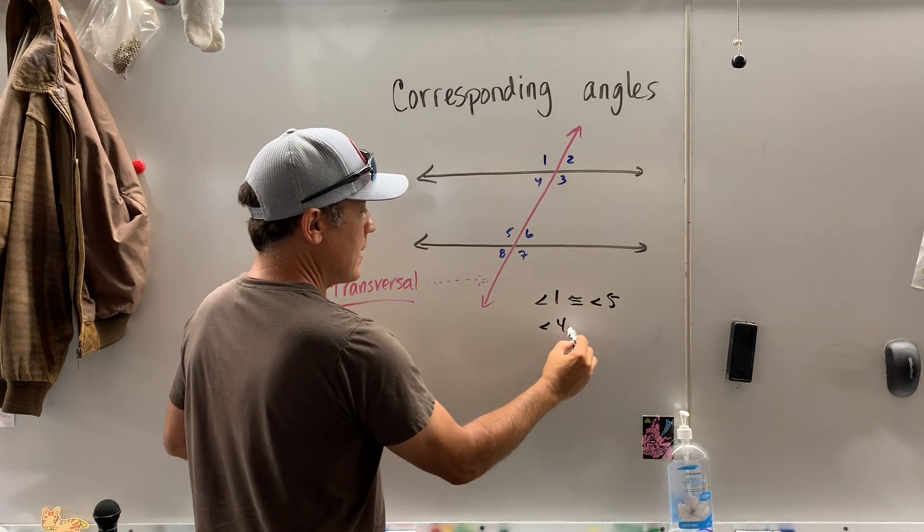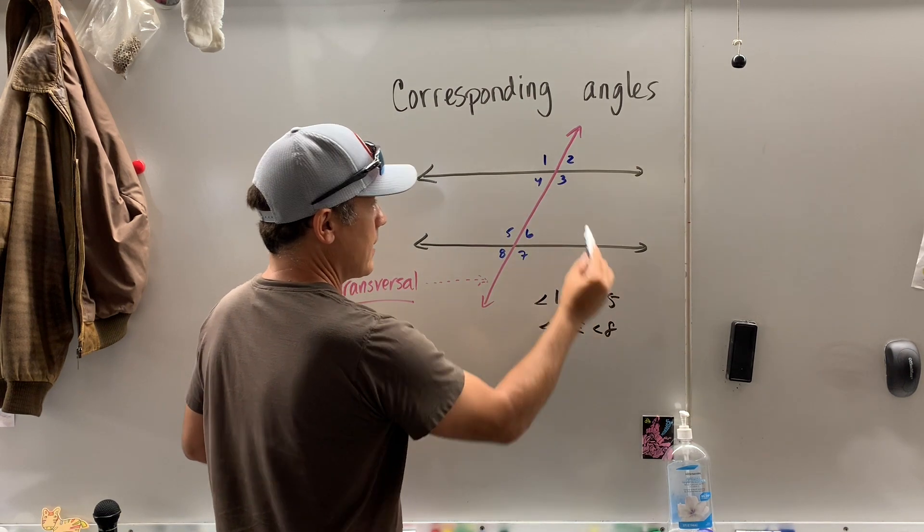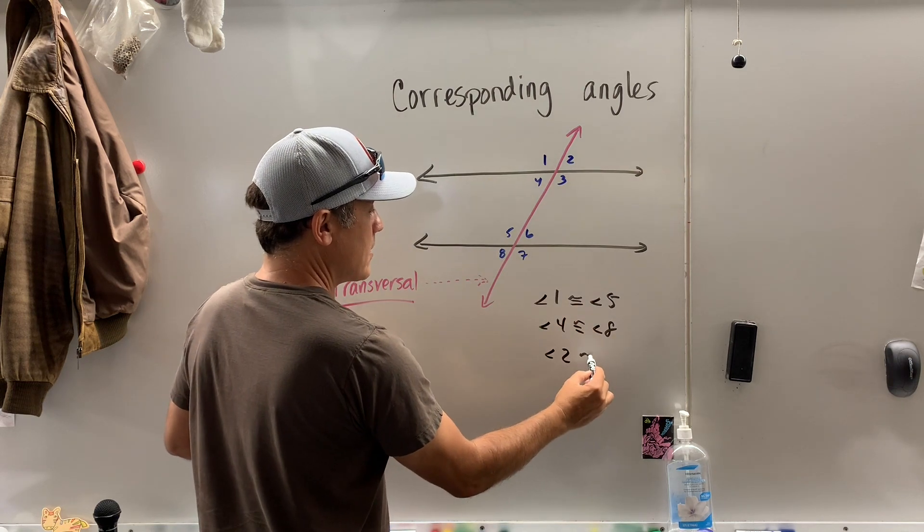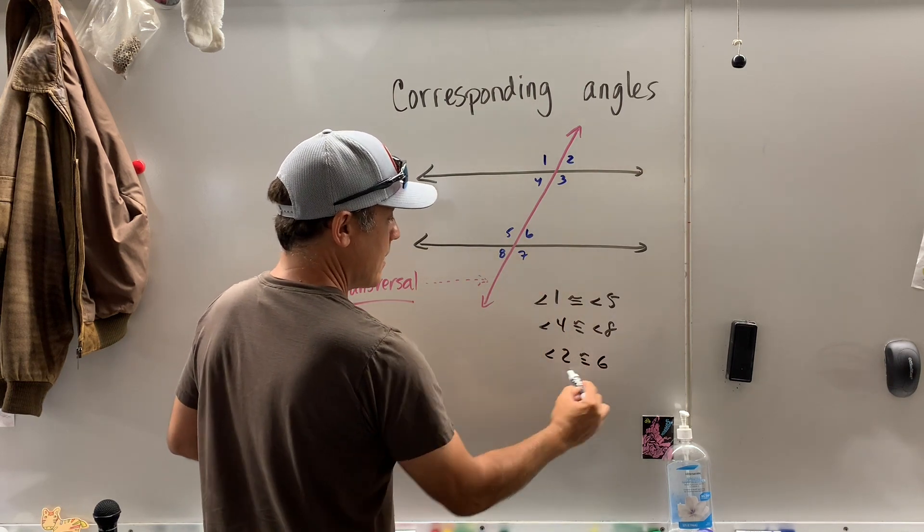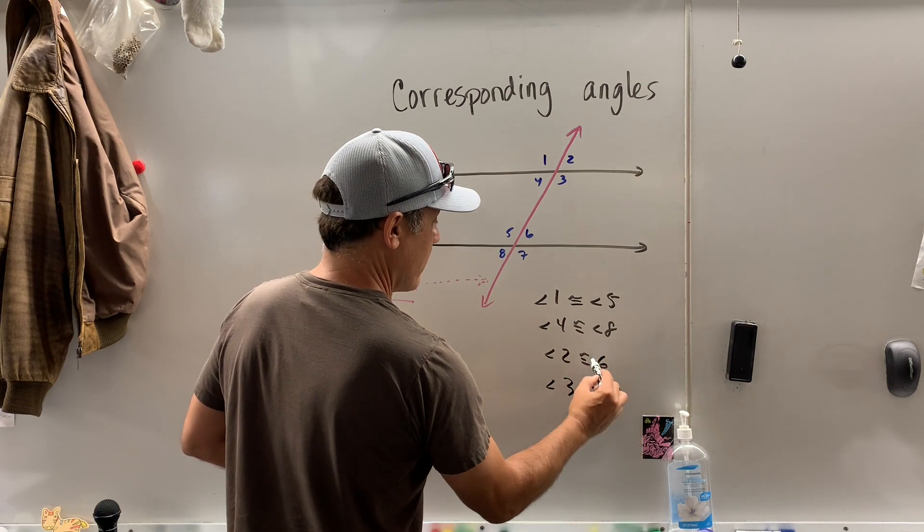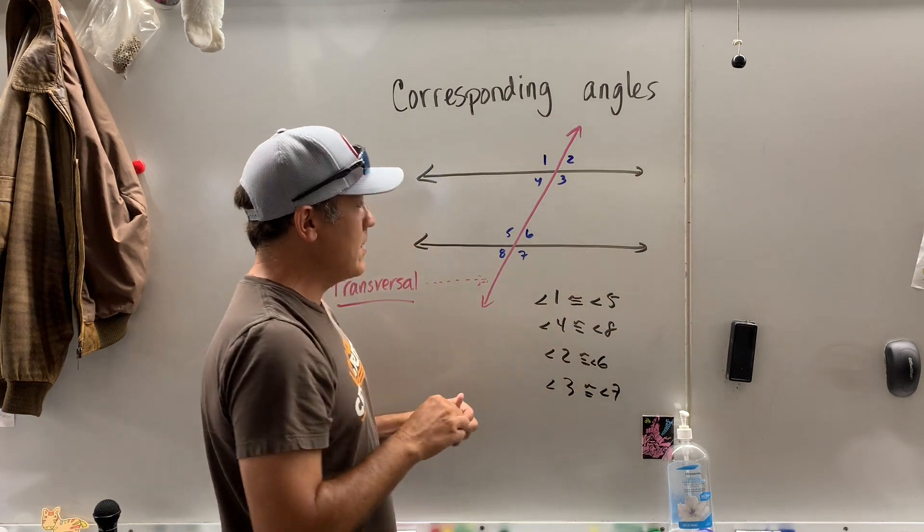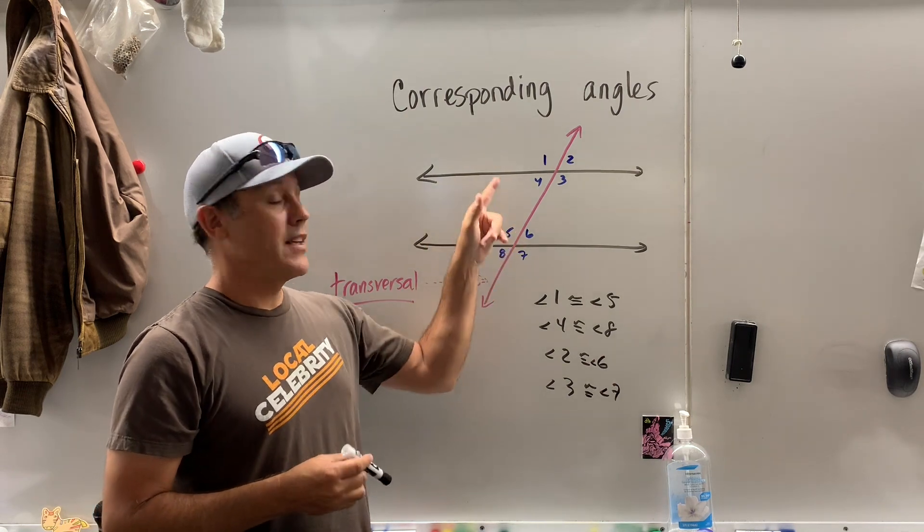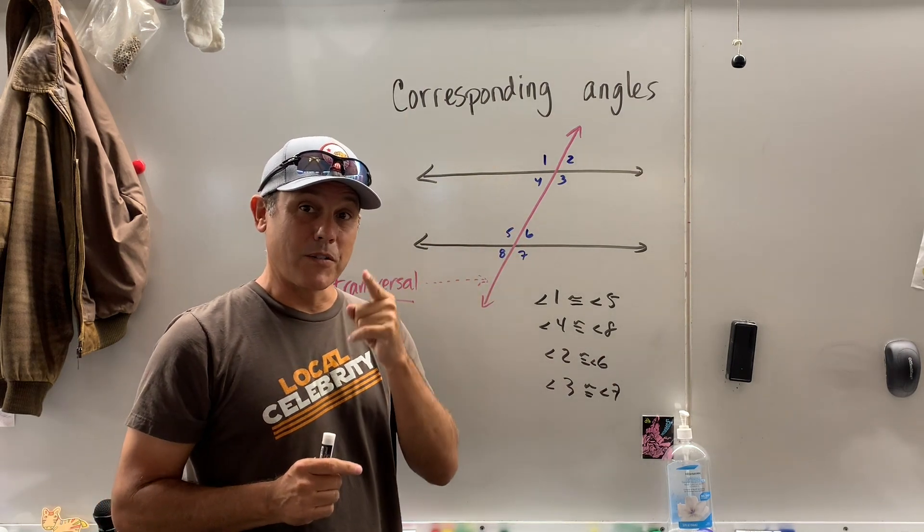Angle 4 is congruent to angle 8. Angle 2 is congruent to angle 6 and angle 3 is congruent to angle 7. So when you have parallel lines cut by the transversal, then the corresponding angles are congruent.